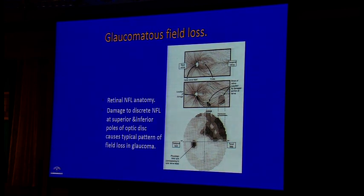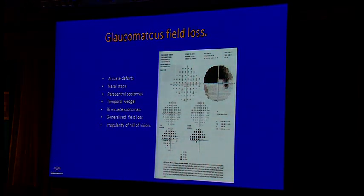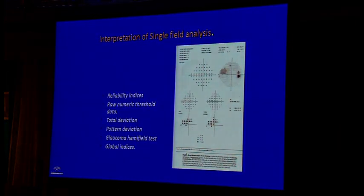Typical glaucomatous visual field loss is determined by the retinal nerve fiber layer arrangement and the pattern of optic nerve damage at particular locations. This produces the characteristic Bjerrum's field loss. Glaucomatous field defects are classified as arcuate defects, nasal steps, paracentral scotomas, and less frequently temporal wedge defects or temporal scotomas. Most characteristic is a generalized depression of the hill of vision.